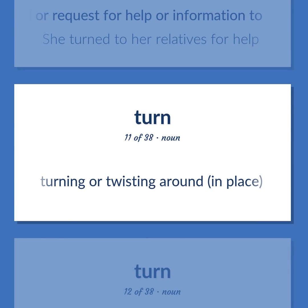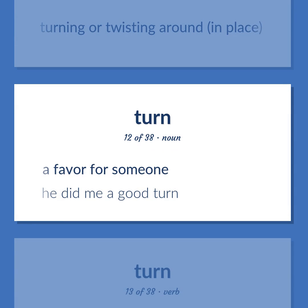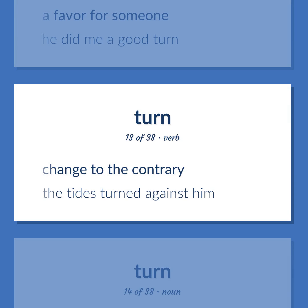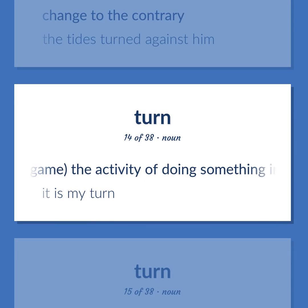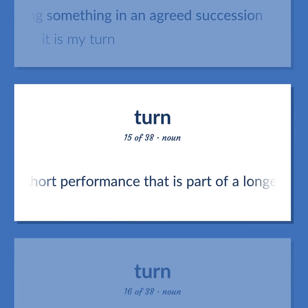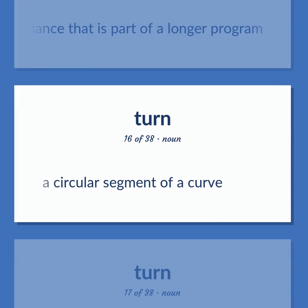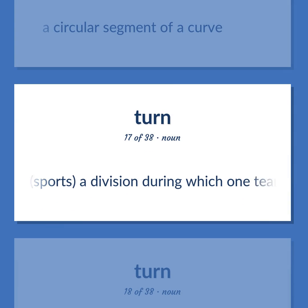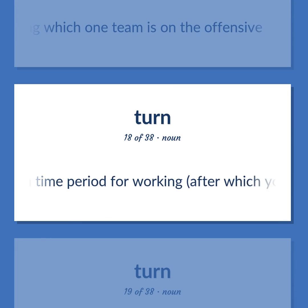Turn. Definition: Turning or twisting around in place. Definition: A favor for someone. Example: He did me a good turn. Definition: Change to the contrary. Example: The tides turned against him. Definition: The activity of doing something in an agreed succession. Example: It is my turn. Definition: A short performance that is part of a longer program. Definition: A circular segment of a curve. Definition: Sports: a division during which one team is on the offensive. Definition: A time period for working, after which you will be relieved by someone else.